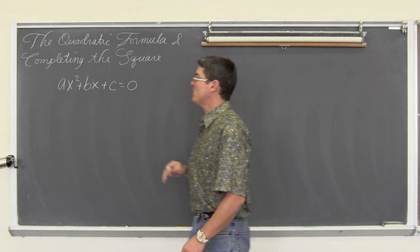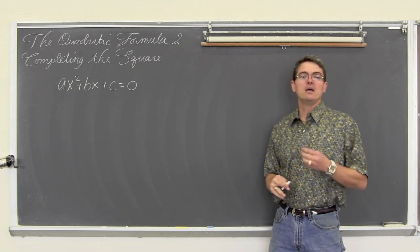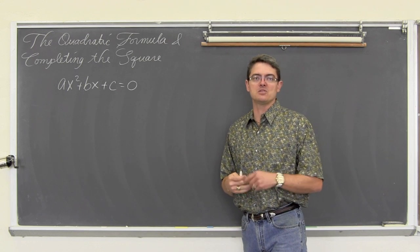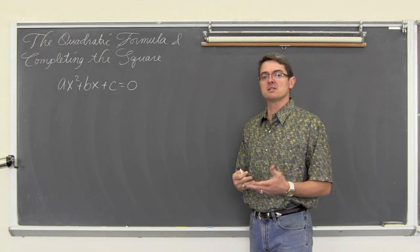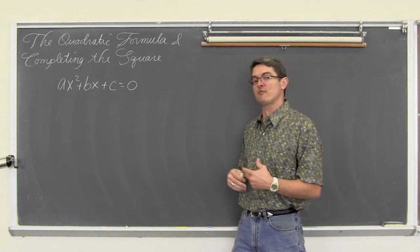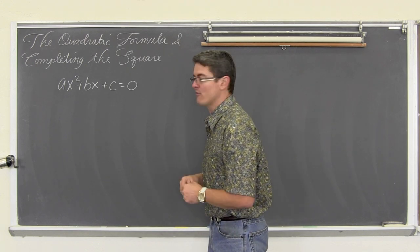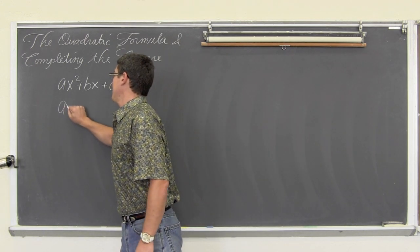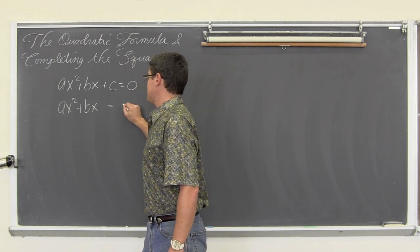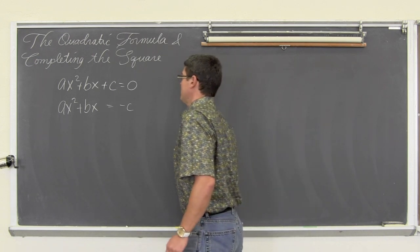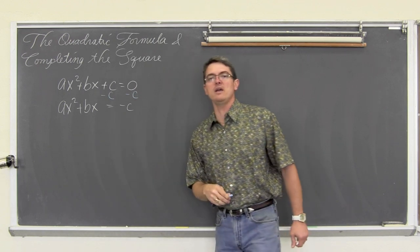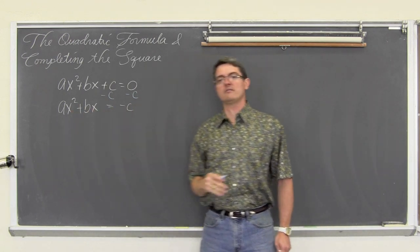When you complete the square, your leading coefficient has to be one, and all the terms with your variable x need to be isolated. So we are going to move c over to the other side to get the constant away from the variable x, the independent or domain variable. So we have ax squared plus bx equals negative c, because we subtract c from both sides to get those x terms alone.